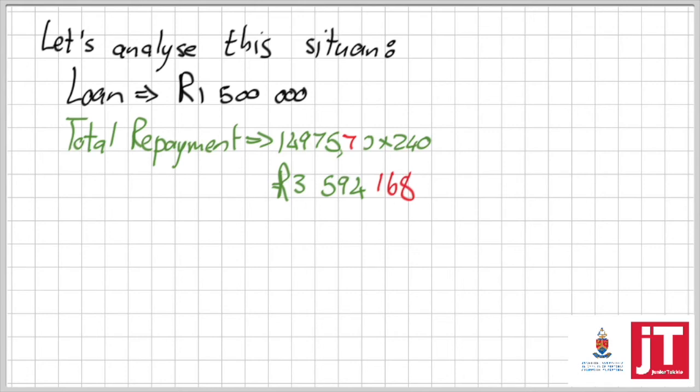All the rest from 1.5 million to there is all just interest. So the total interest that you actually repay, if I subtract them, I'm going to get R2,094,168 worth of interest. It's more than 1.5 million rands, more than 2 million rands worth of interest that the bank gets for just lending you the money. It is insane how much money they make.